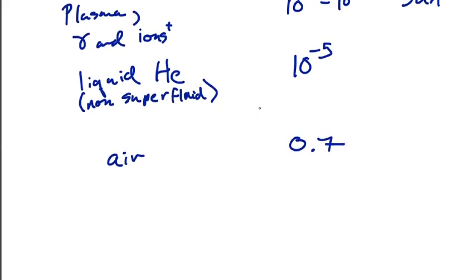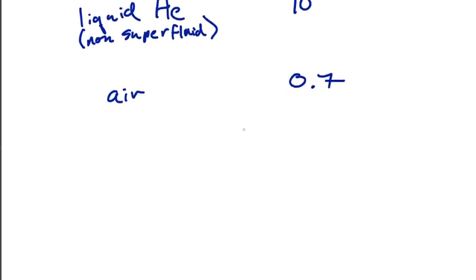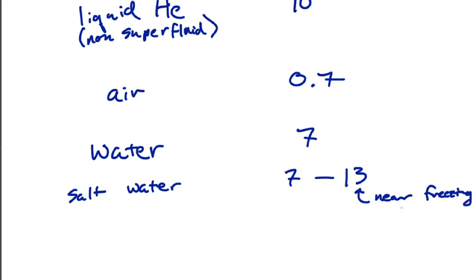Okay. Well, does anything have a Prandtl number greater than one? Well, yes. And in fact, one of the fluids that you're most familiar with has a Prandtl number greater than one. So water, fresh water has a Prandtl number of about seven, and salt water, depending on its temperature, has a Prandtl number that ranges from about seven for sort of like room temperature-ish things, to about 13 near the freezing point. So the Prandtl number of water is actually quite a bit greater than one.